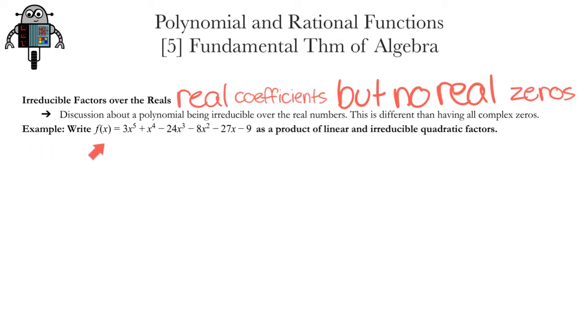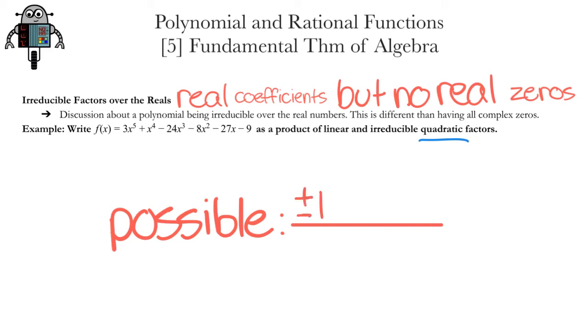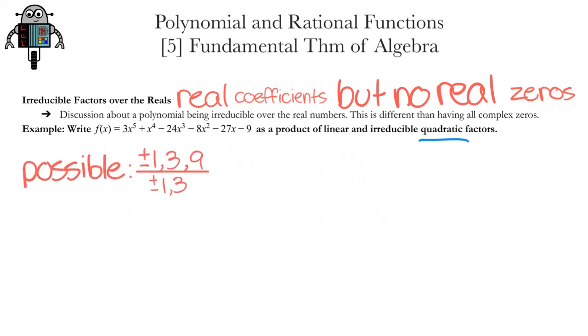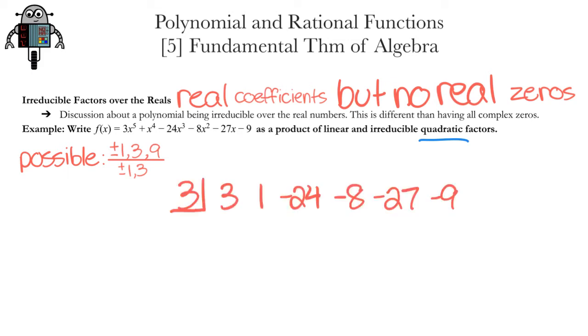Write f(x) as a product of linear and irreducible factors. Let's find the possible zeros first. The factors of 9, plus or minus 1, 3, and 9, divided by the factors of 3, positive and negative, 1 and 3. We're not going to use the calculator at all on this question. I'm choosing 3 for synthetic division because I noticed that there are multiples of 3 in the polynomial. So I put 3 in the box, draw a horizontal line, and drop down the first coefficient.